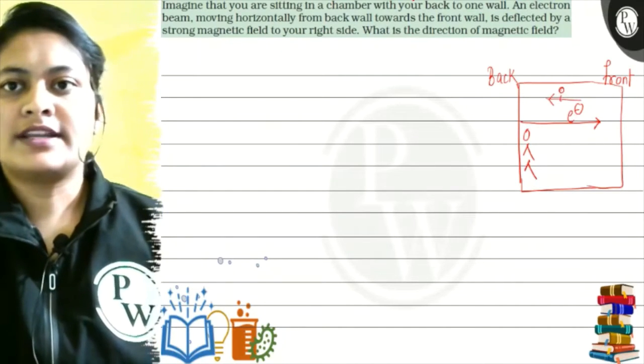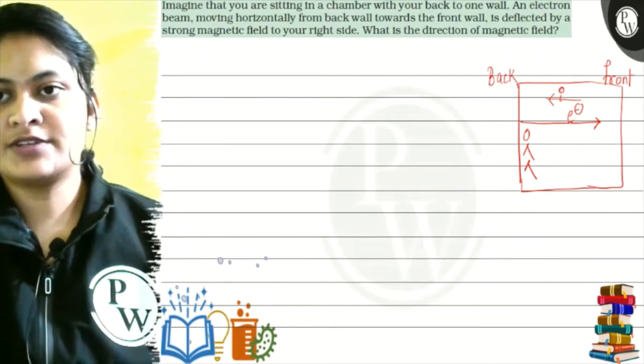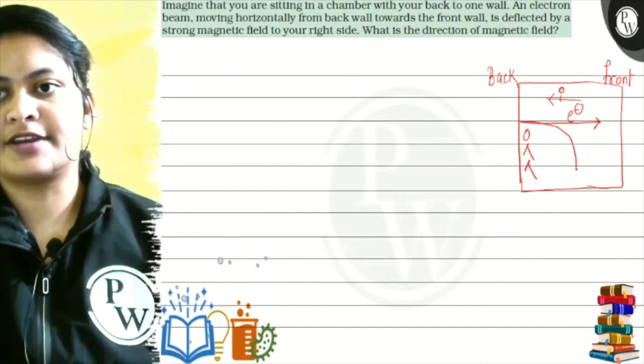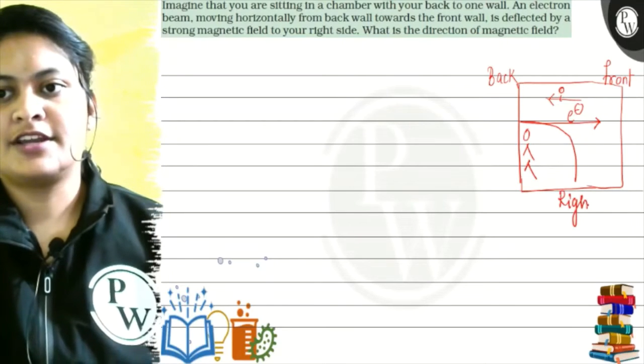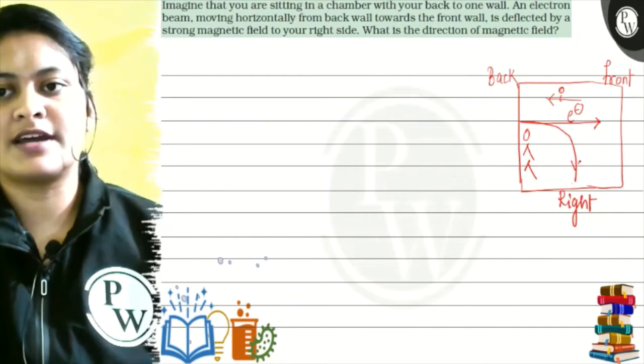So, it is deflected by a strong magnetic field to your right side. Now, this electron is going here. What is the current direction? Our right side. Right? Our right side, our electron is deflected by a strong magnetic field. The force is acting here.